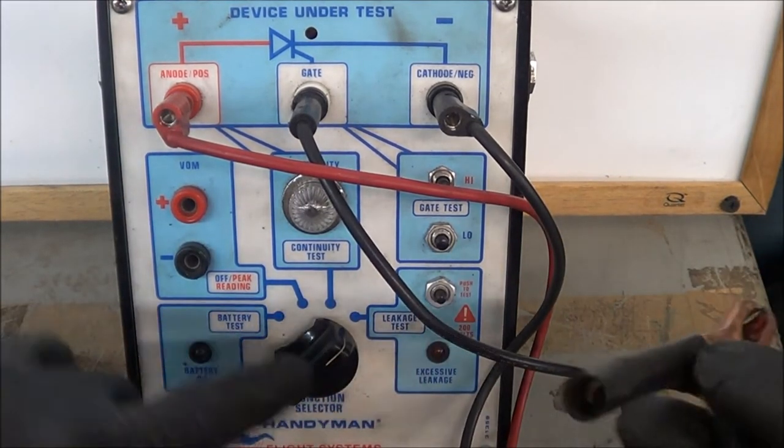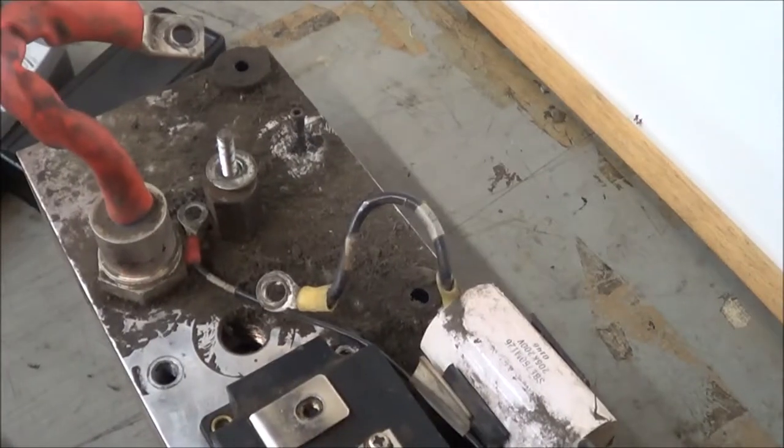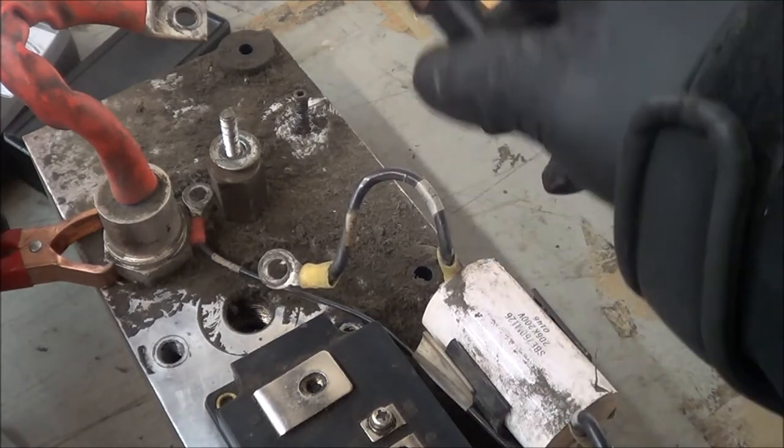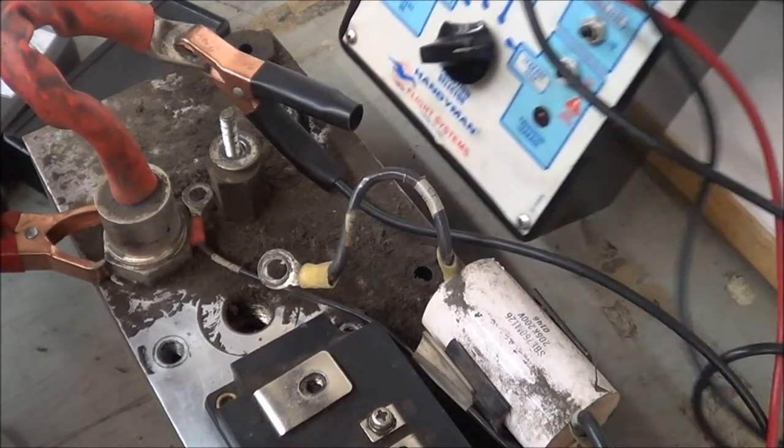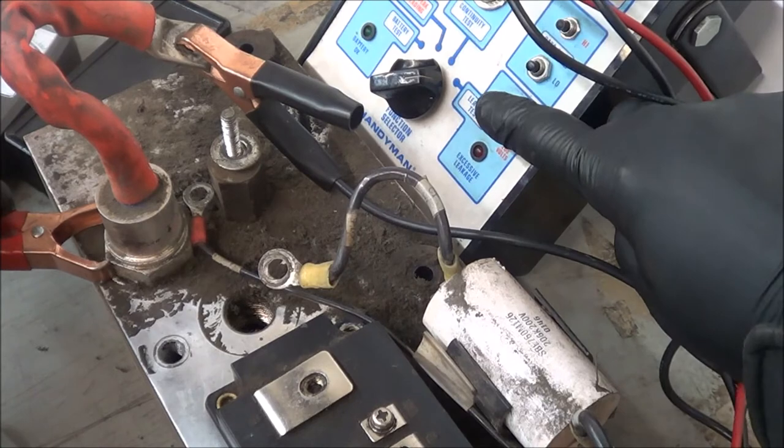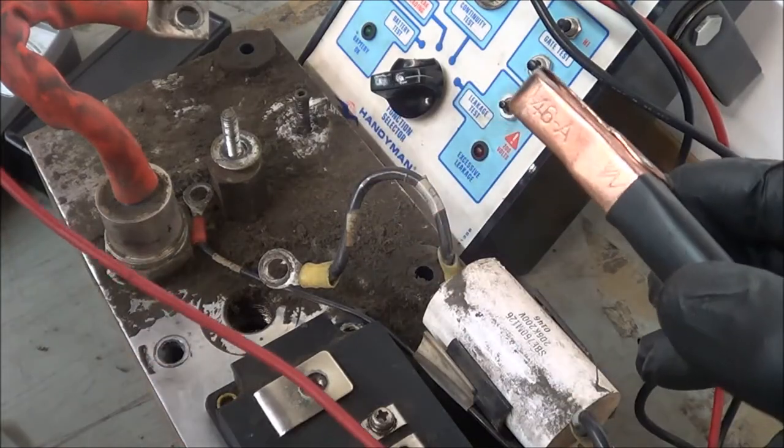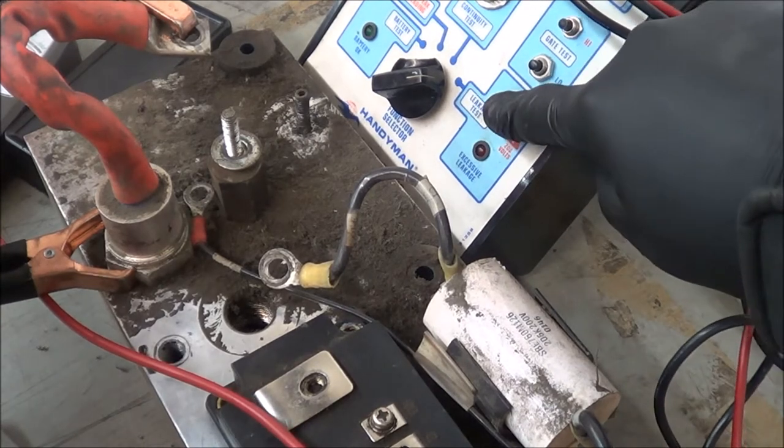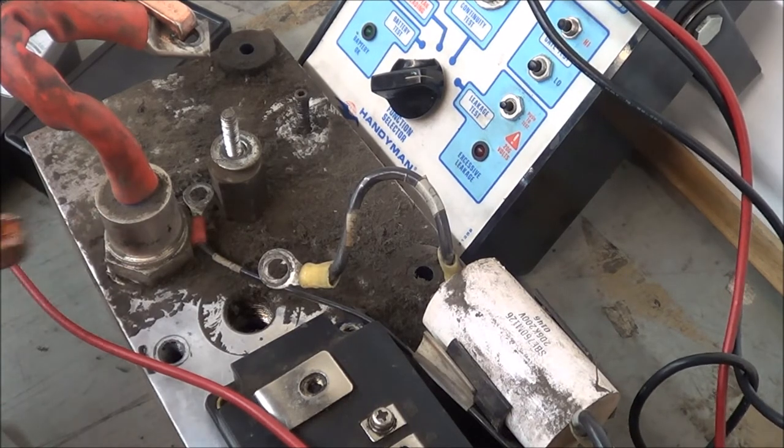Now we're going to test the first big diode. So positive on the base, then negative on the tail. And then show the meter right here, we push the leakage test. Okay, that's fine, that's forward biased. Now we're going to put it on reverse. So the LED didn't light up, meaning 200 volts was going through reverse but it didn't pass through. This diode is still good.